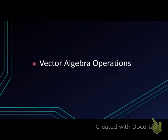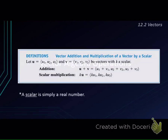Now we are going to talk about vector algebra operations. Let's start from the basic one. Let's say we have u equals to (u1, u2, u3) and v equals to (v1, v2, v3). These two are vectors, and then we have scalar k.